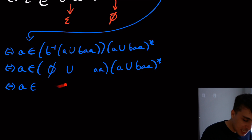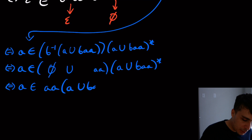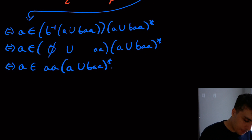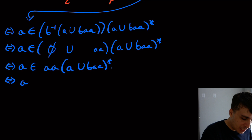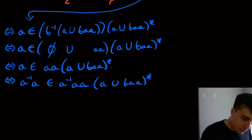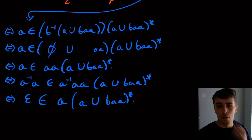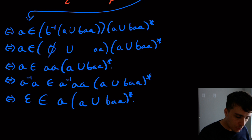Empty set union `aa` simplifies to `aa`. So now we're down to: is `a` in `aa · (a union b)aa*`? We multiply by `a` inverse again on both sides; the leading `a`'s cancel, giving us: is epsilon in `a(a union b)aa*`? We can verify that this is not in this regex.